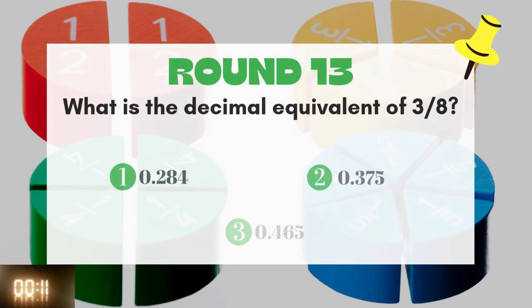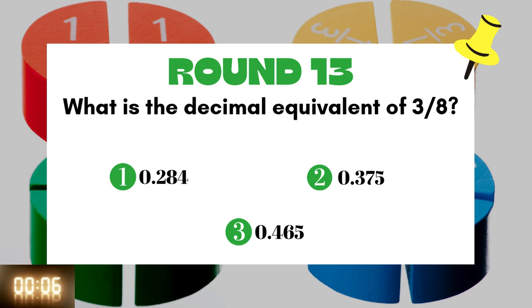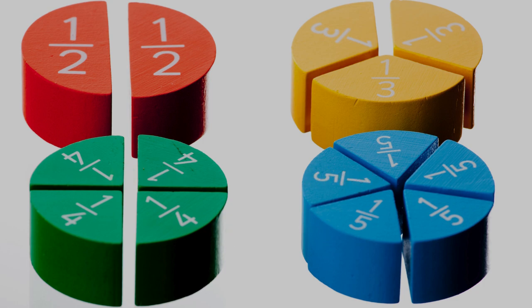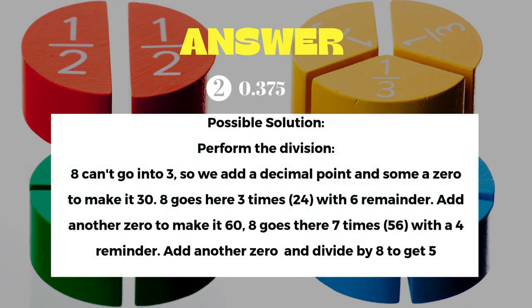Round 13: What is the decimal equivalent of 3 over 8? The answer is 0.375.